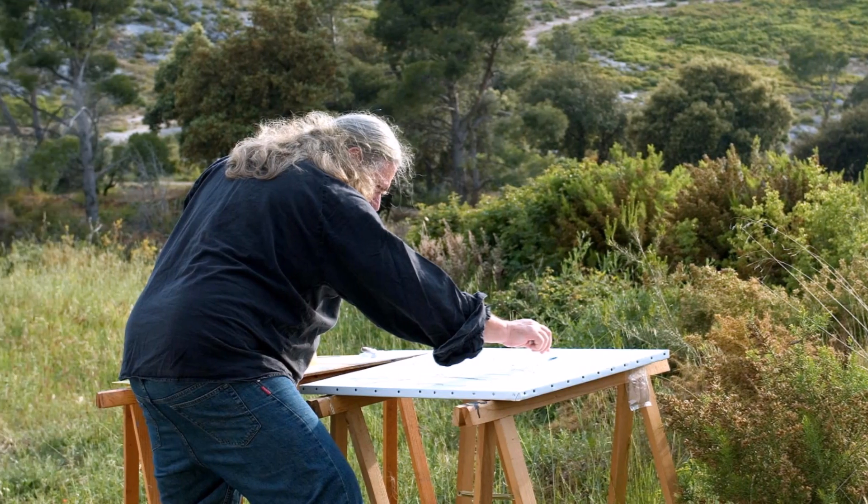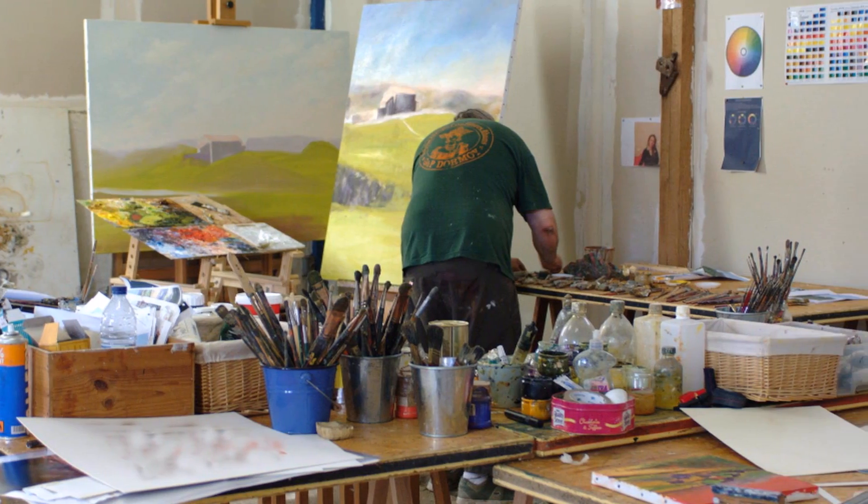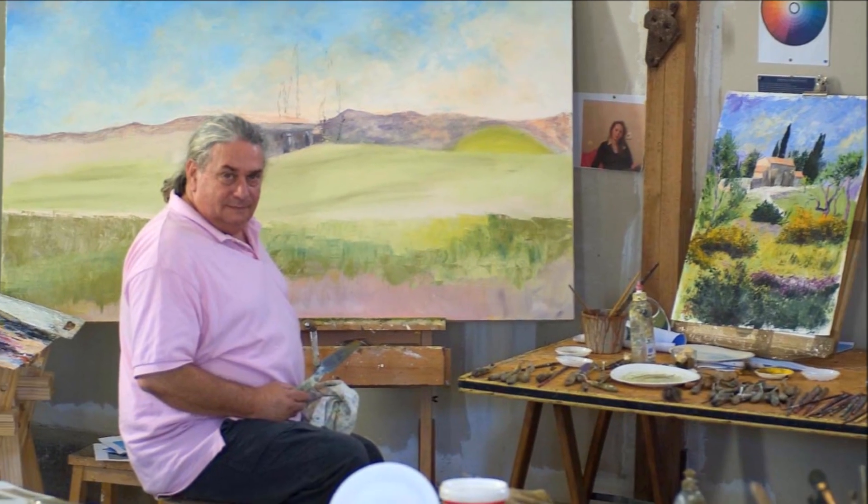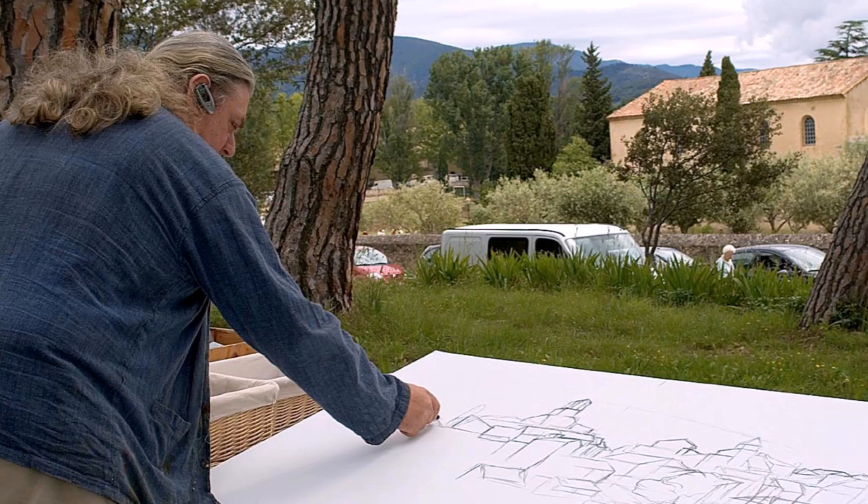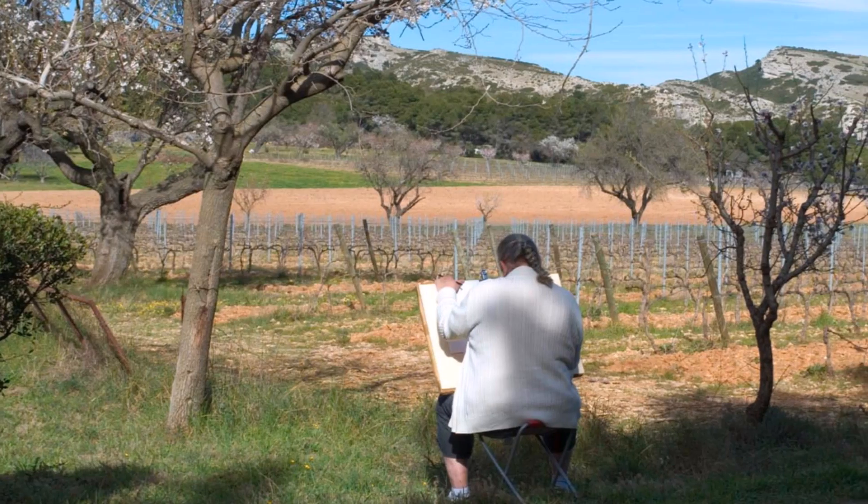Subjugué par la lumière qui jaillit des couleurs, il étudie les mélanges optiques à travers les différents courants artistiques et s'épanouit dans une écriture poétique. Il privilégie déjà l'expression et la transmission de l'émotionnel plutôt que le souci du réalisme.